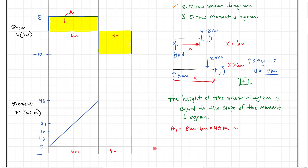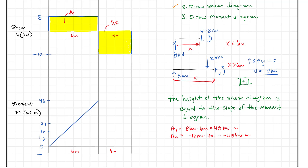Now looking at the second region, we have a shear of minus 12 kilonewtons over 4 meters. Area 2 = minus 12 kilonewtons × 4 meters = minus 48 kilonewton-meters. The moment at Point 1 equals Area 1 = 48 kN·m. The moment at Point 2 equals A1 plus A2 = 48 plus (minus 48) = zero. That's not trivial — it means our moment comes all the way back down to zero at the right support, which is what we expect.